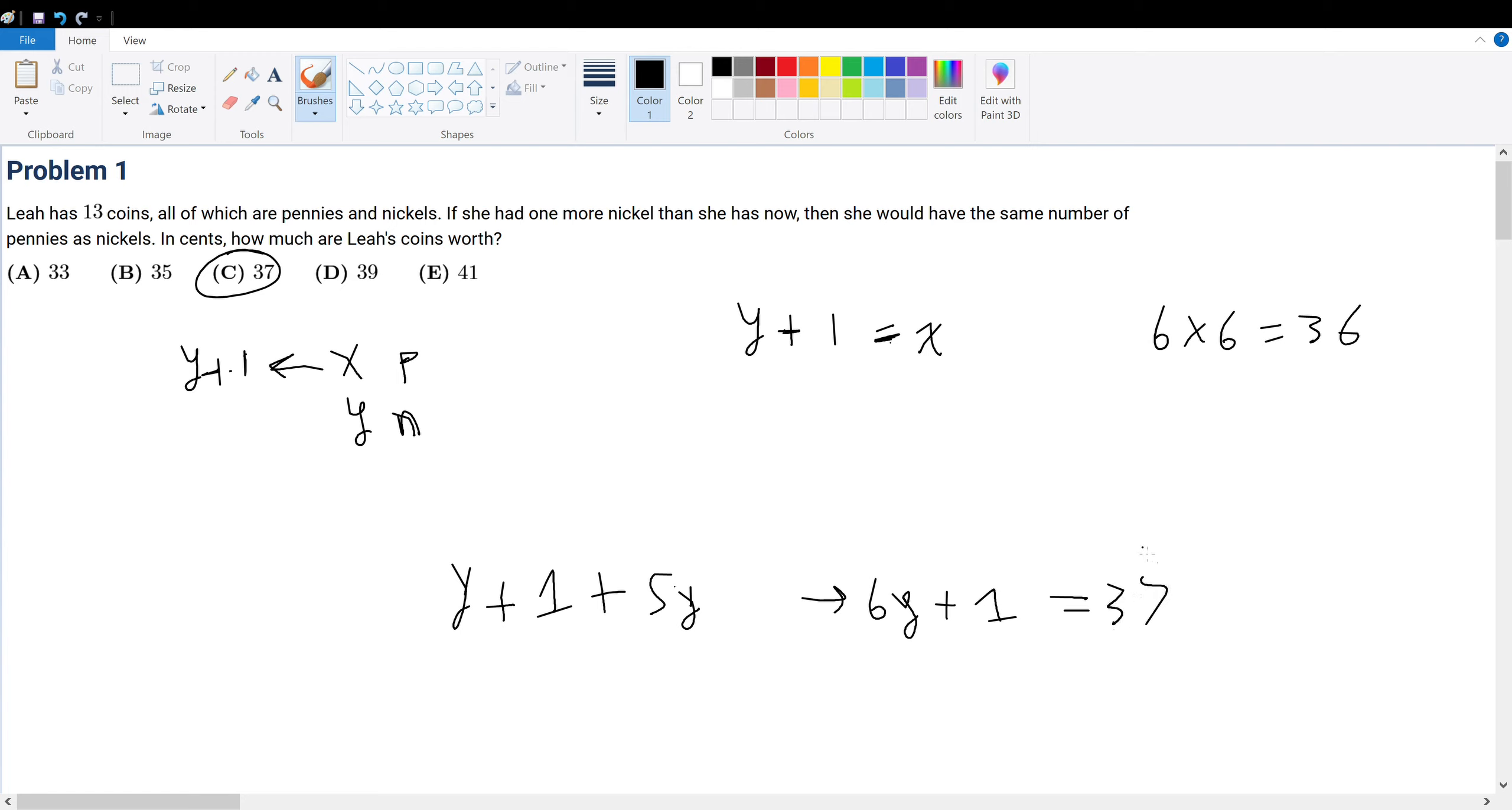But let's see if anything else works. 39 minus 1 is 38, that obviously doesn't work. 41 minus 1 is 40, that obviously doesn't work. 35 minus 1 is 34, 33 minus 1 is 32. So only C works, so that's your final answer.